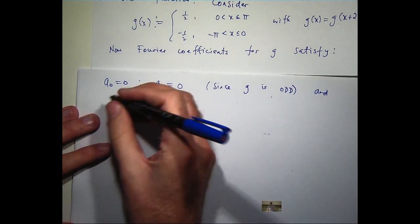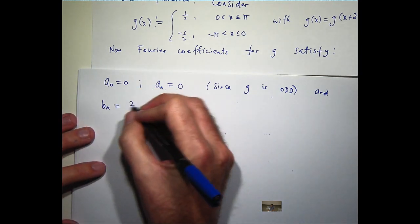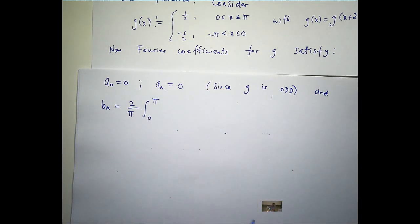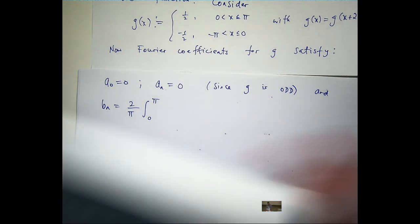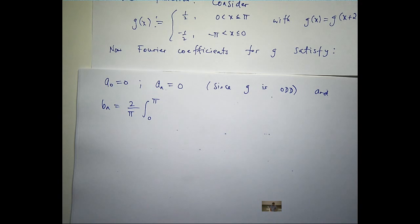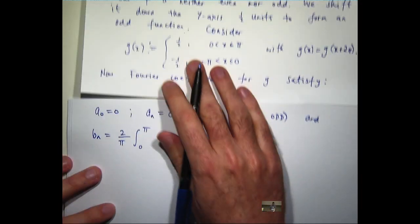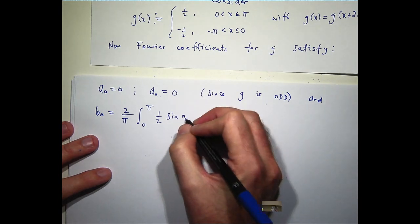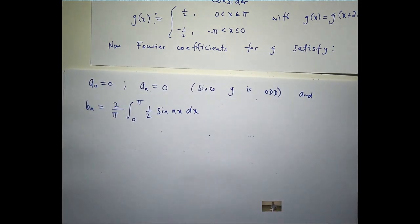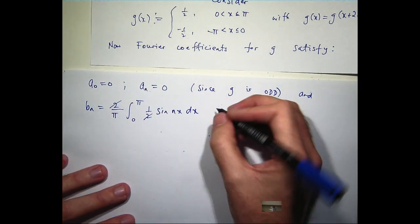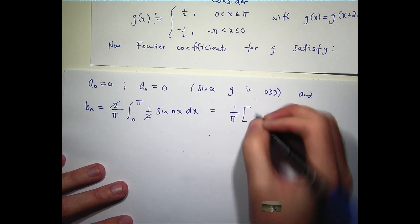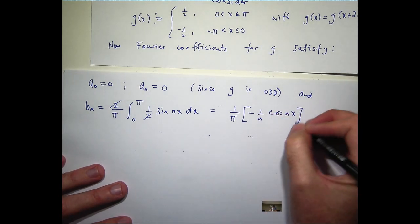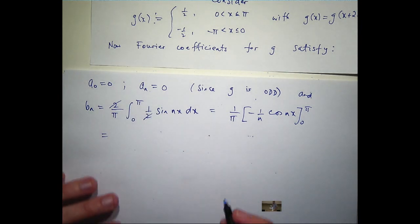a_0 is 0, or the a_n's are 0 as well, since g is odd. And again, since g is odd, the b sub n's are just twice the integral from this formula. Again, big L's pi here. Now, if I'm integrating from 0 to pi, what is the value of my function g on that interval? Well, it's a half. It's not negative a half, it's a half. So this is what I'm going to get.